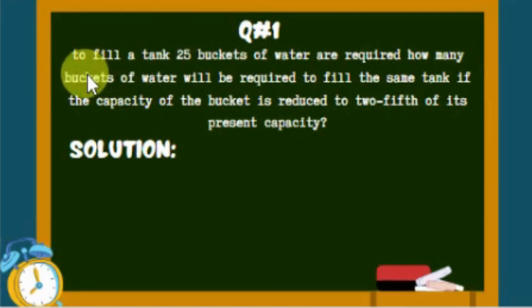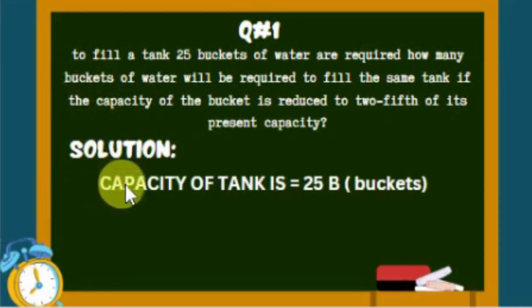So I'll put this detail in easy form, one by one for easy understanding. Number one: Capacity of tank is equal to 25B, where B represents buckets. Number two: